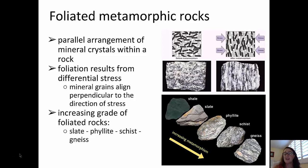Moving on to how metamorphic rocks become foliated. If you think about a typical granite, as shown here, all of the crystals are oriented in a random fashion. If you apply stress from two sides — differential stress — those mineral crystals are going to line up so that they are parallel to one another, with their long axis perpendicular to the direction of the stress being applied. At the bottom, we see pictures of foliated metamorphic rocks in a typical sequence of increasing metamorphic grade.